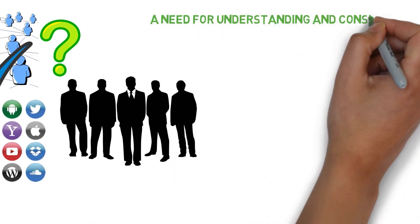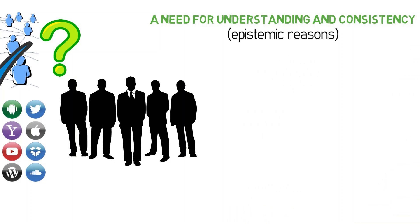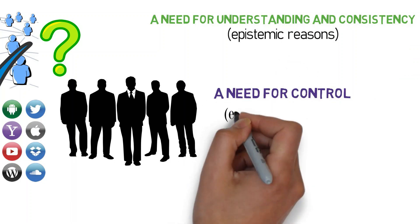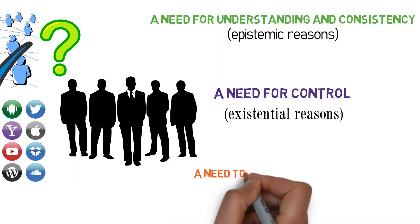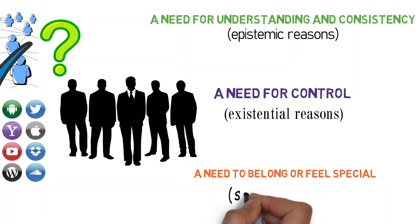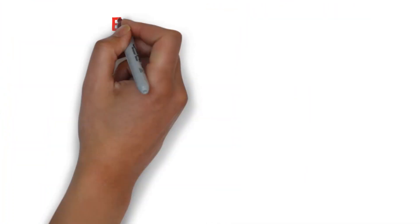Many of these explanations boil down to three key driving factors. A need for understanding and consistency, or epistemic reasons. A need for control, or existential reasons. A need to belong or feel special, social reasons. Let's start with epistemic reasons.